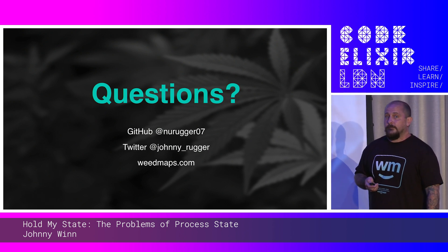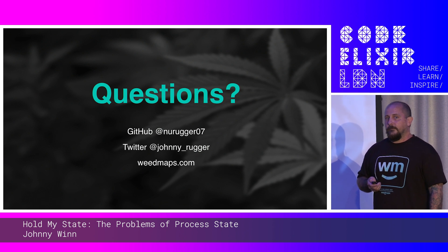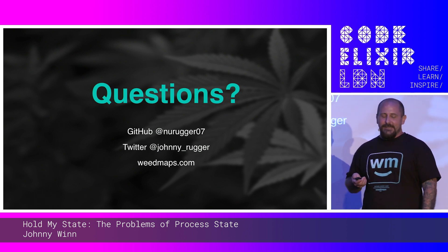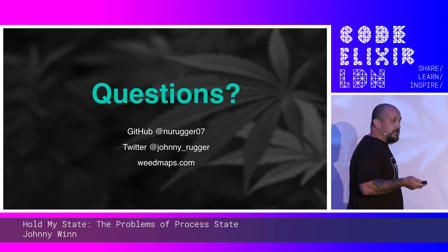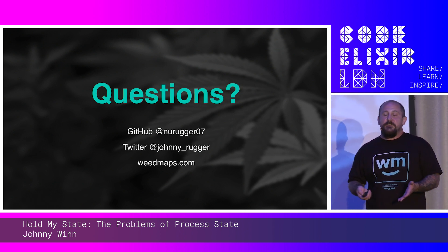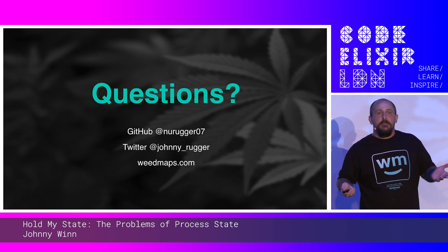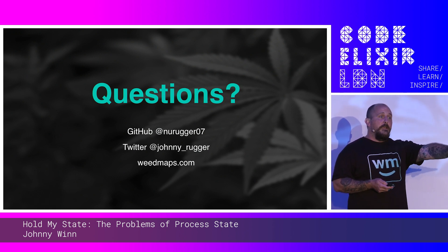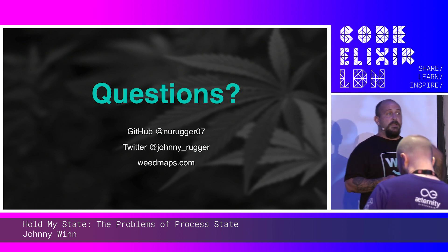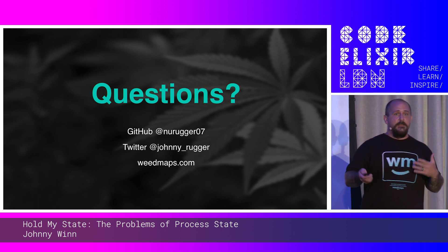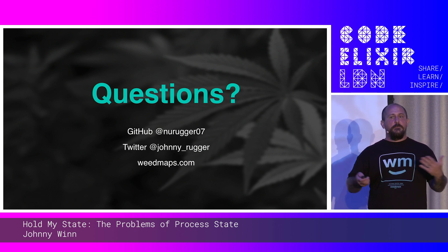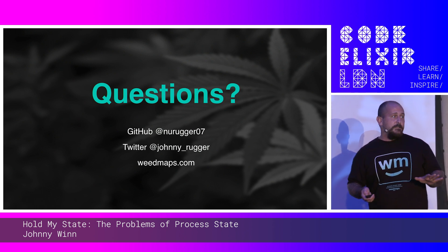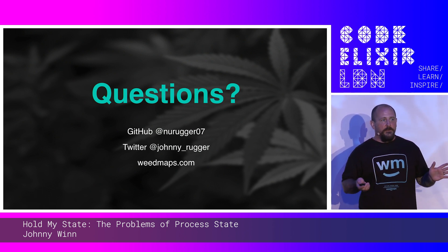Out of all of these different problematic scenarios, which one have you encountered most in production? All of them. It's almost like whack-a-mole sometimes — depending on the scenario, one path seems like it's the right answer until it's not, and then you have to switch to a different method. But I do find that using Call in most cases is the best because it does help kind of build some artificial slowing down of those processes.